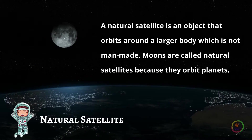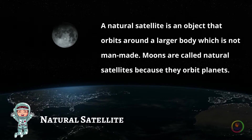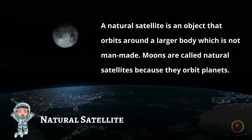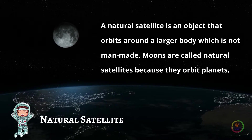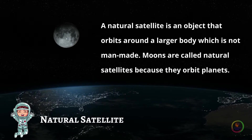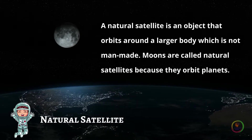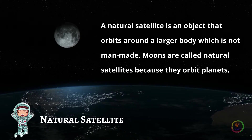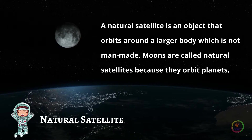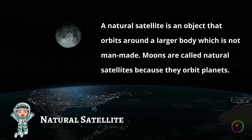Natural satellite. A natural satellite is an object that orbits around a larger body which is not man-made. Moons are called natural satellites because they orbit planets.